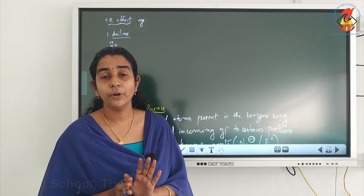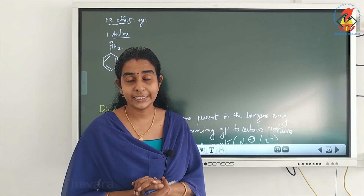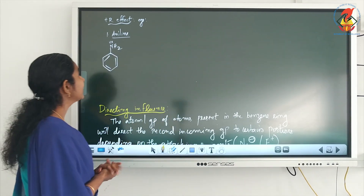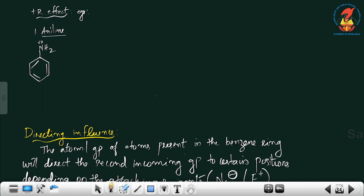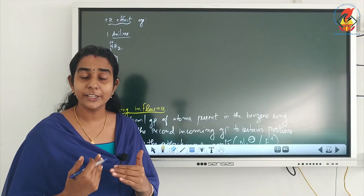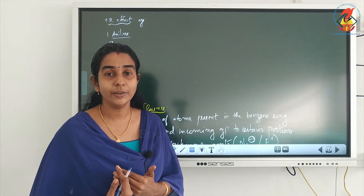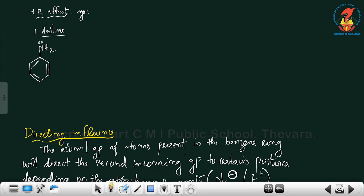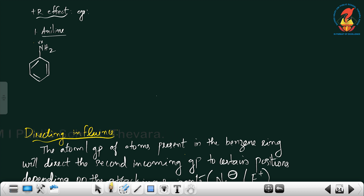The examples of plus R effect or positive resonance are very important for class 12. The first example is aniline, which has an NH2 group attached to a benzene ring. When NH2 is attached to a benzene ring (a conjugated system), the lone pairs on nitrogen are in conjugation with the double bonds of the benzene ring, creating a polarity known as resonance.